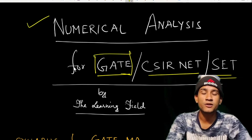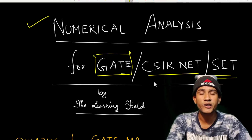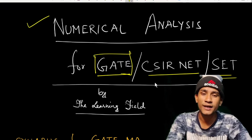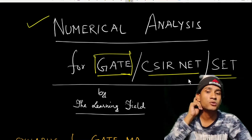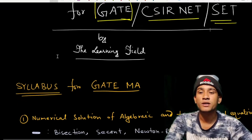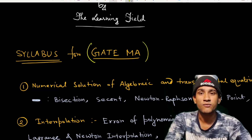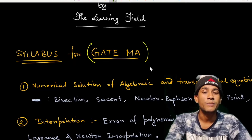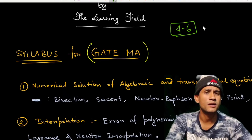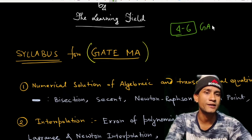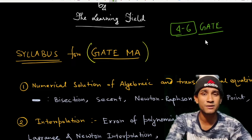The syllabus for the GATE examination of numerical analysis is very big compared to CSIR NET and SET. We study numerical analysis in such a way that we mainly focus on GATE, but this lecture series is also helpful for CSIR NET and SET. In the GATE mathematics exam, around four to eight marks come from numerical analysis, making its weightage very significant.